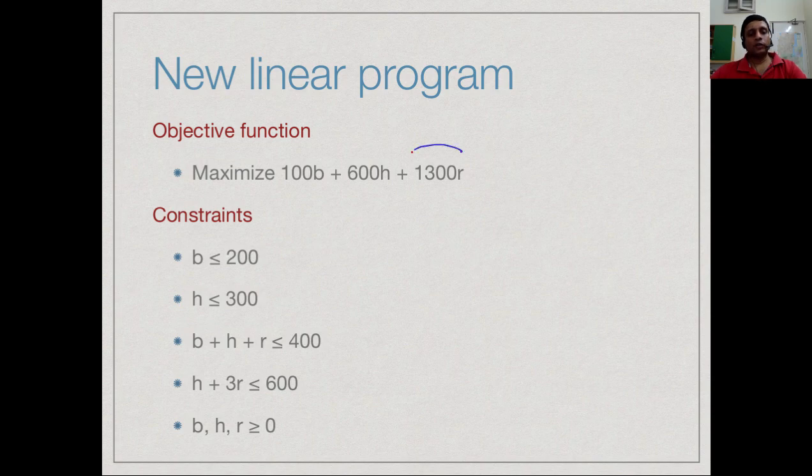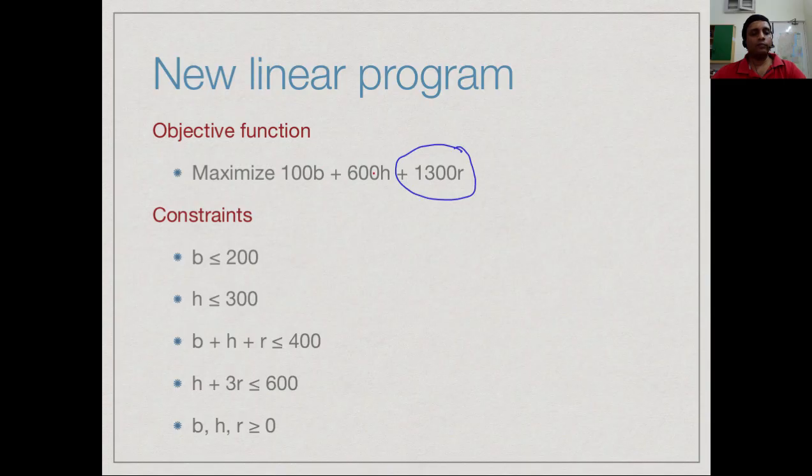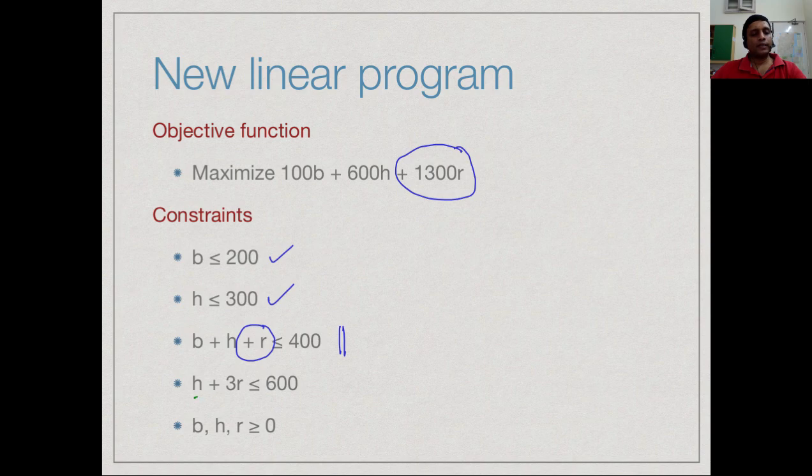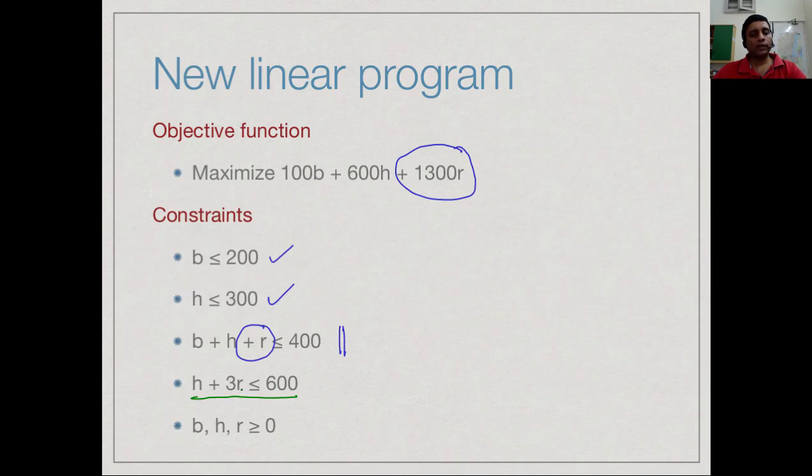If you look at the equation now, the objective function now has an extra quantity which is the profit we get from rasmalai. We have an extra variable: B and H as before for barfi and halwa and R for rasmalai. So we get 100 rupees per box of barfi, 600 rupees per box of halwa and 1300 per box of rasmalai. The constraints on barfi and halwa demand are the same and there is no constraint for rasmalai. The total production now includes the rasmalai, so all three together must be below 400. This expresses the milk constraint: I can make 600 boxes of halwa at one extreme, at the other extreme I can make 200 boxes of rasmalai because 200 times 3 will be 600. But I can make any combination and that will require the same amount of milk or less. So h plus 3r must be less than or equal to 600. This is the milk constraint. Finally, all three of these quantities must be greater than or equal to 0.